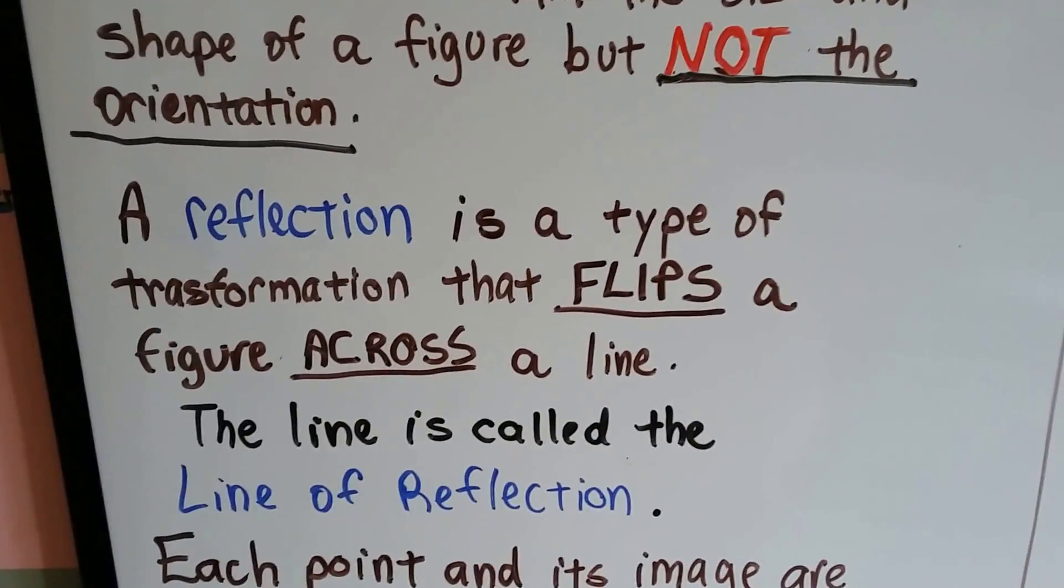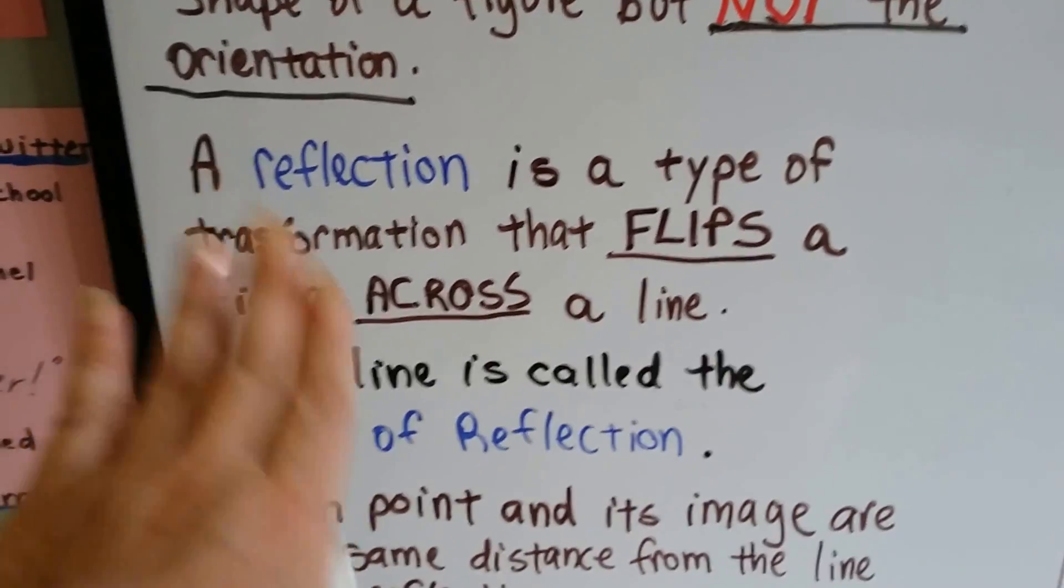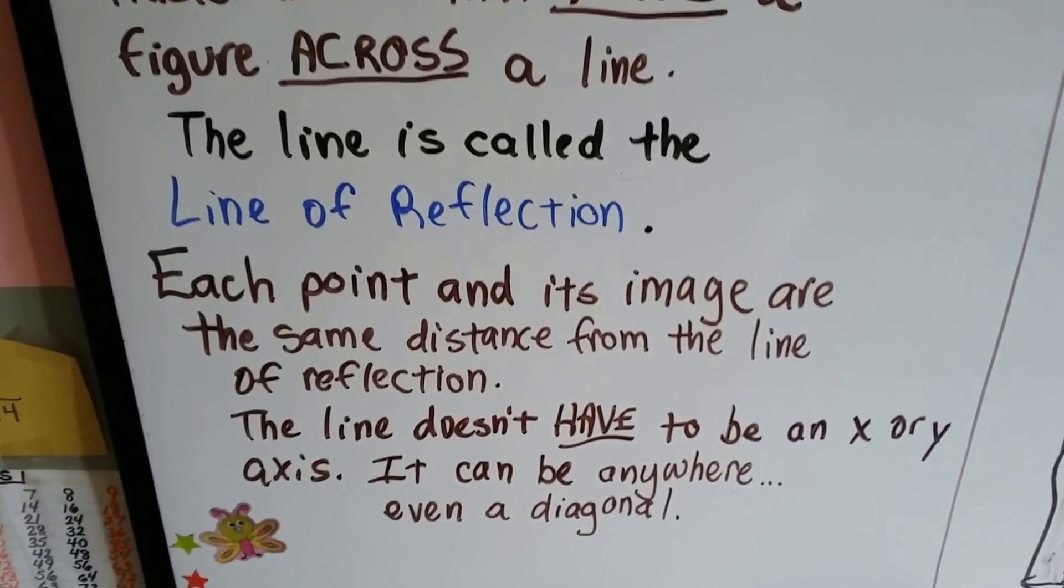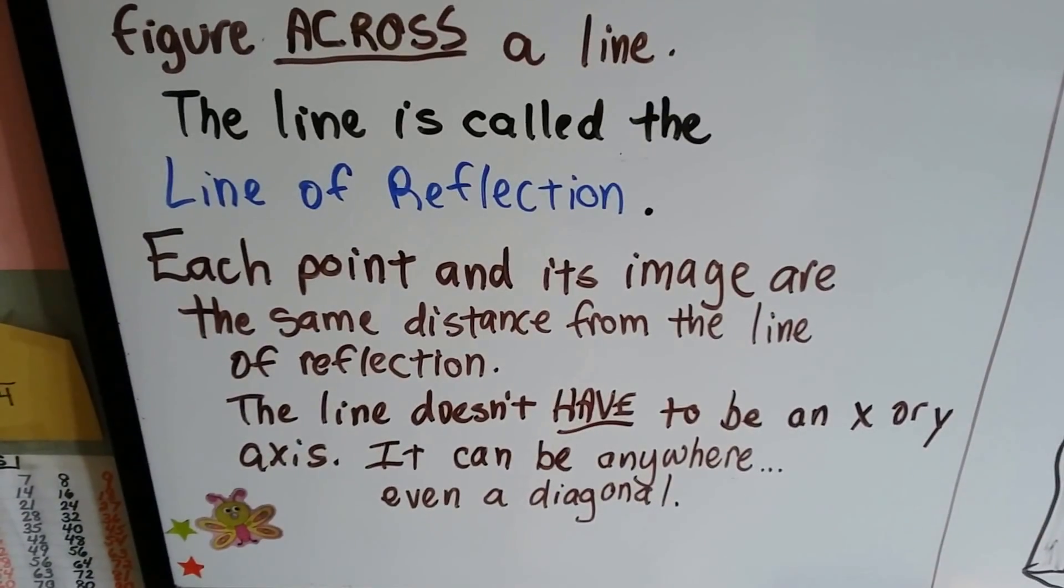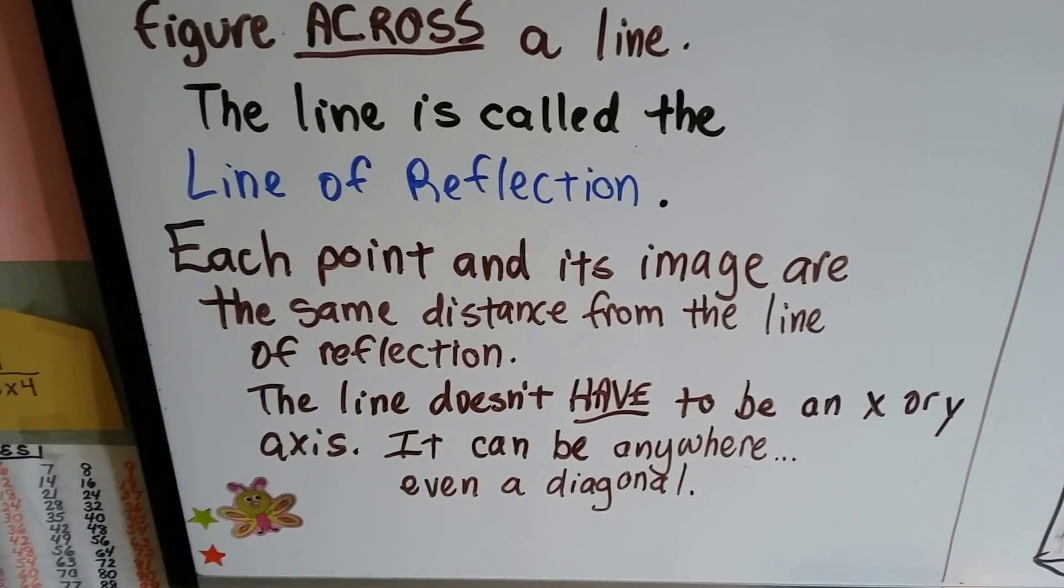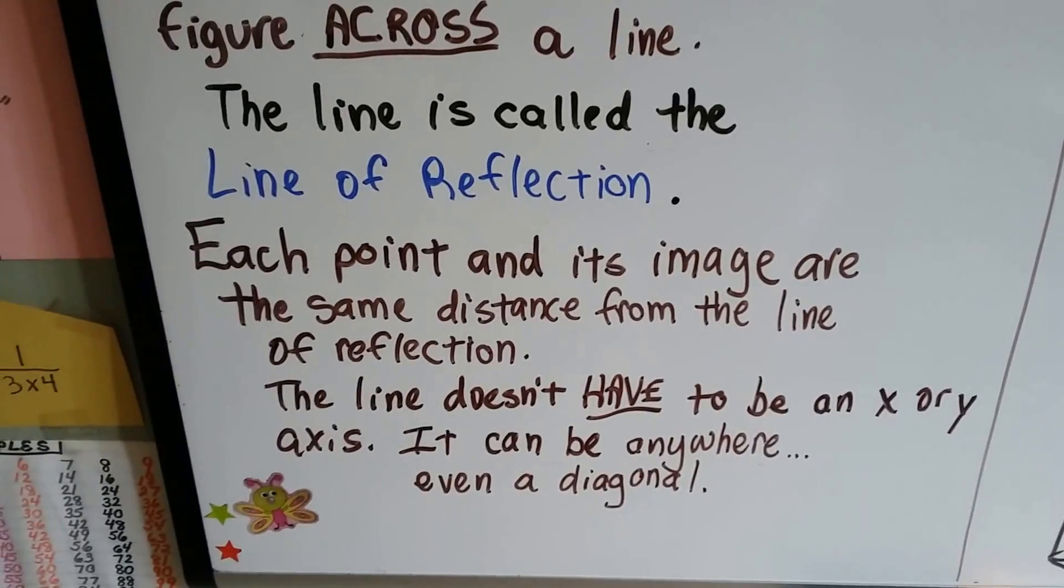A reflection is a type of transformation that flips a figure across a line, and the line is called the line of reflection. Each point and its image are the same distance from the line of reflection. The line doesn't have to be an x or y axis. It could be anywhere, even a diagonal.